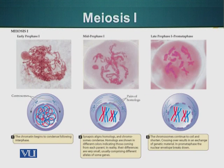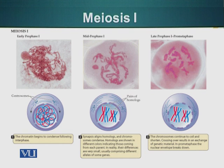Meiosis 1 has a very long prophase, which can be categorized into three different stages. Early prophase 1 begins when the chromatin starts to condense after interphase. The chromatin has already divided during the S phase, which is part of interphase. Also in early prophase 1, the centrosomes have divided and are moving towards the opposite ends of the cell.